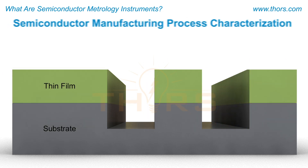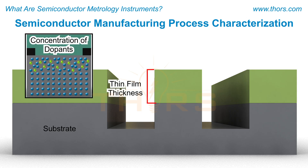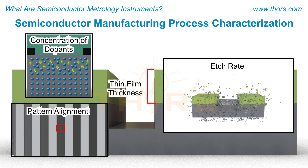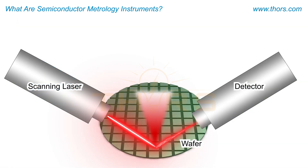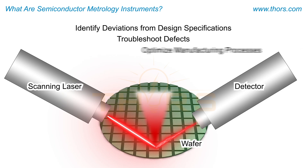Semiconductor manufacturing process characterization involves analyzing and evaluating various parameters such as thin film thickness, concentrations of dopants, pattern alignment, and etch rate. Semiconductor metrology instruments help identify deviations from design specifications, troubleshoot defects, and optimize manufacturing processes to maximize yield.